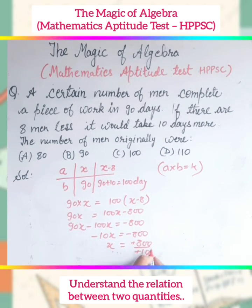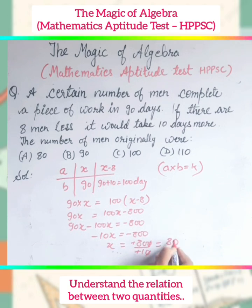So it is the correct answer. Minus is canceled. One zero is canceled. The number of men is 80. So 80 is the correct answer. Thank you.